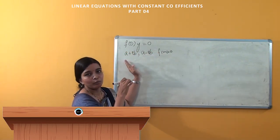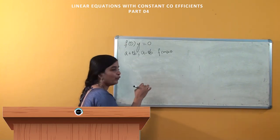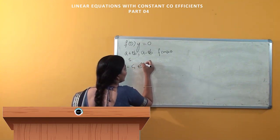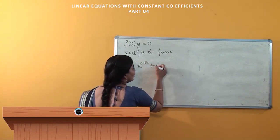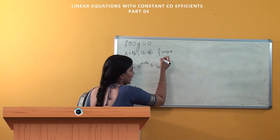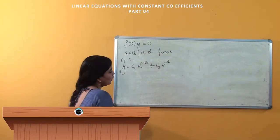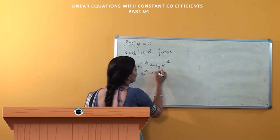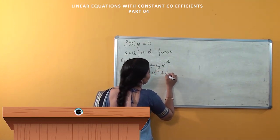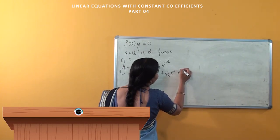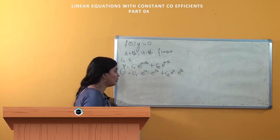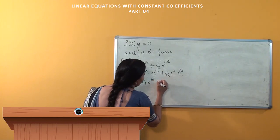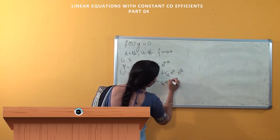In the auxiliary equation, both a + ib and a - ib are roots. So the general solution can be written as y = c1·e^((a+ib)x) + c2·e^((a-ib)x). We can split this as c1·e^(ax)·e^(ibx) + c2·e^(ax)·e^(-ibx). Since e^(ax) is common in both terms, we factor it out to get e^(ax)·[c1·e^(ibx) + c2·e^(-ibx)].